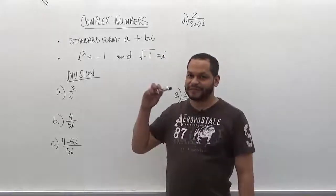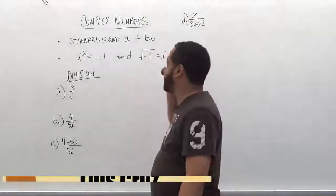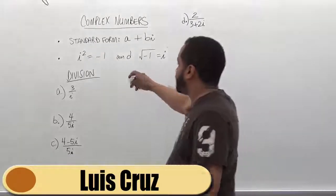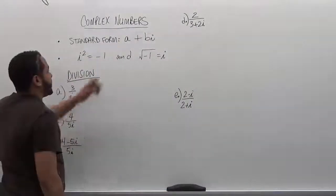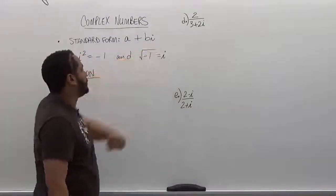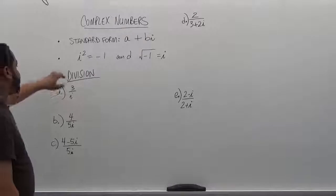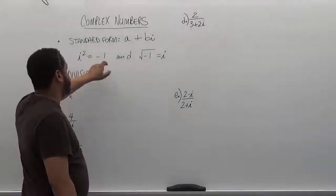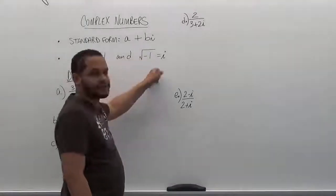Welcome to HelpYourMath.com. In this video we're going to continue the complex number series with division. Remembering that the standard form of any solution is a plus bi, where a and b are numbers and i represents the imaginary component. Also, i squared is equivalent to negative 1, and the square root of negative 1 is also i.